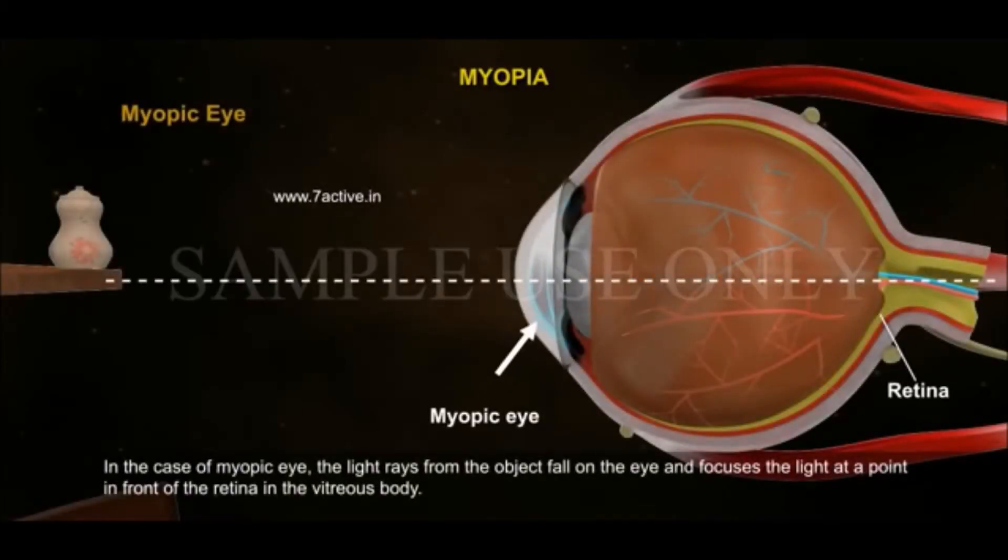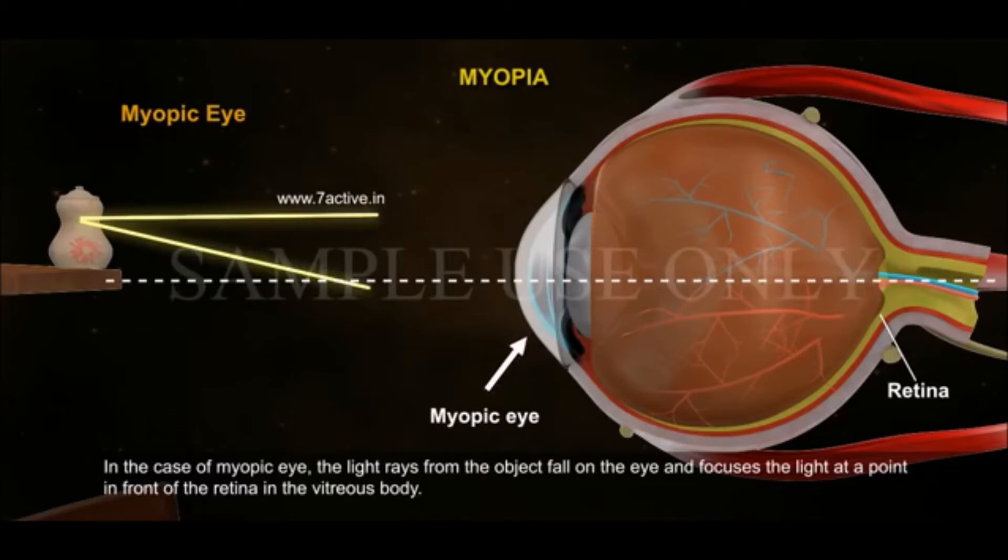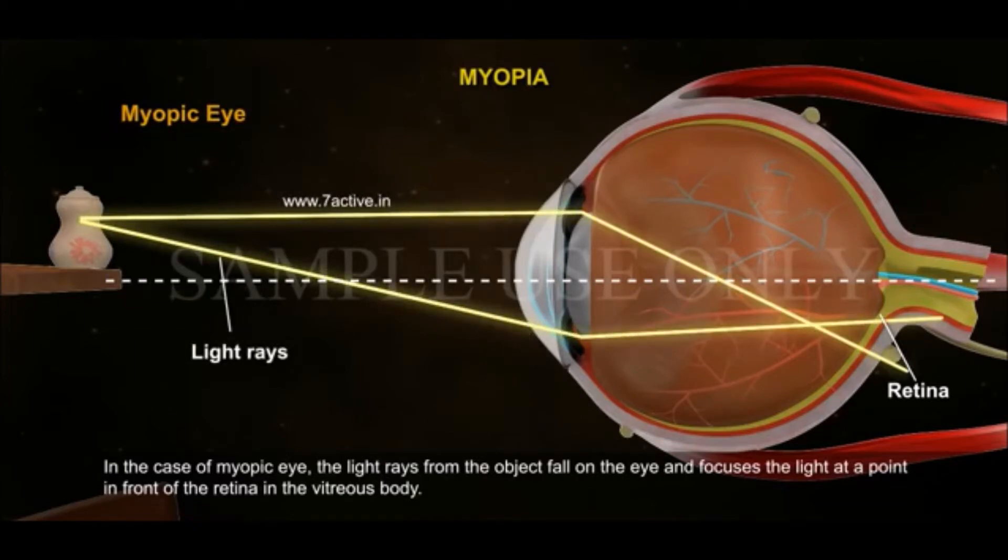As you can see from this animation, a person with nearsightedness experiences blurry vision because light rays are focused at a point in front of the retina.